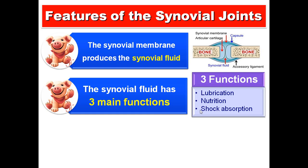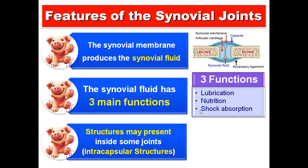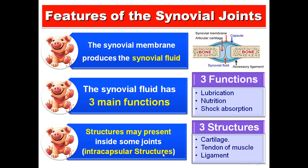Synovial joints may contain some structures — we call them intracapsular structures — like cartilage, or a tendon of a muscle, or a ligament.